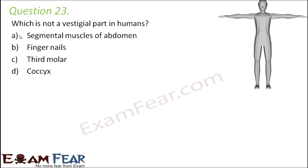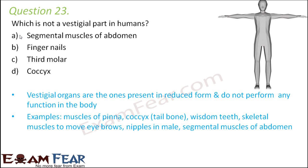Question number 23: which is not a vestigial part in humans? A vestigial organ refers to an organ which is present in reduced form and does not perform any function in the body — present but serving no function.